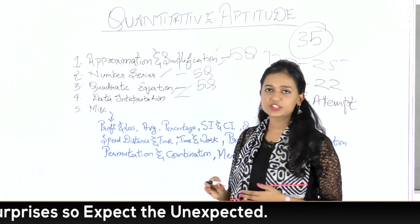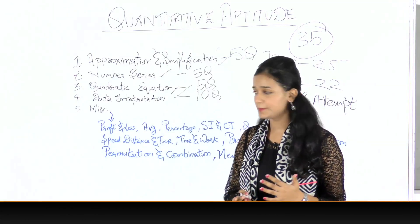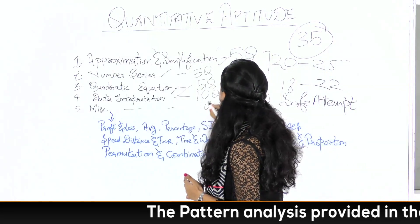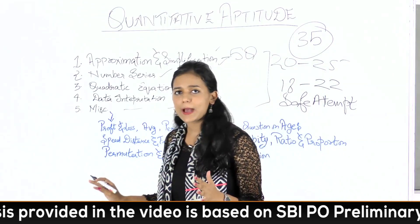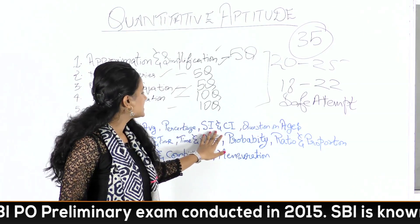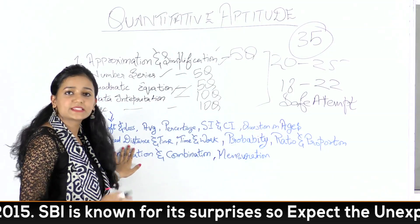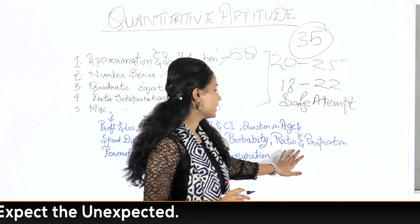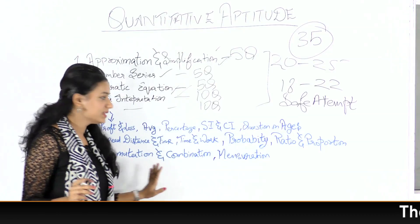Next is Data Interpretation (DI), worth 10 marks — 10 questions. Then Miscellaneous, which includes Language Problems, also worth 10 marks. Topics in Miscellaneous include important chapters such as Profit and Loss, Average, Percentage, Simple Interest and Compound Interest, Questions on Ages, Speed Distance and Time, Time and Work, Probability, Ratio and Proportion, Permutation and Combination, and Mensuration.